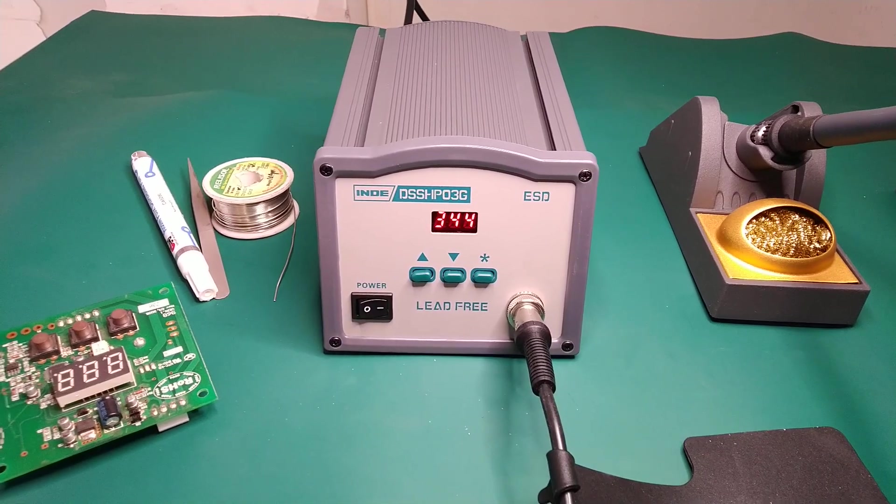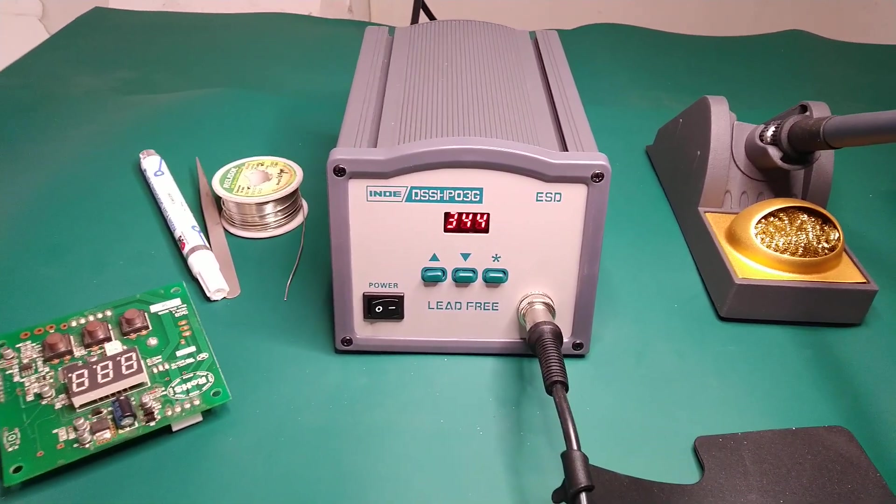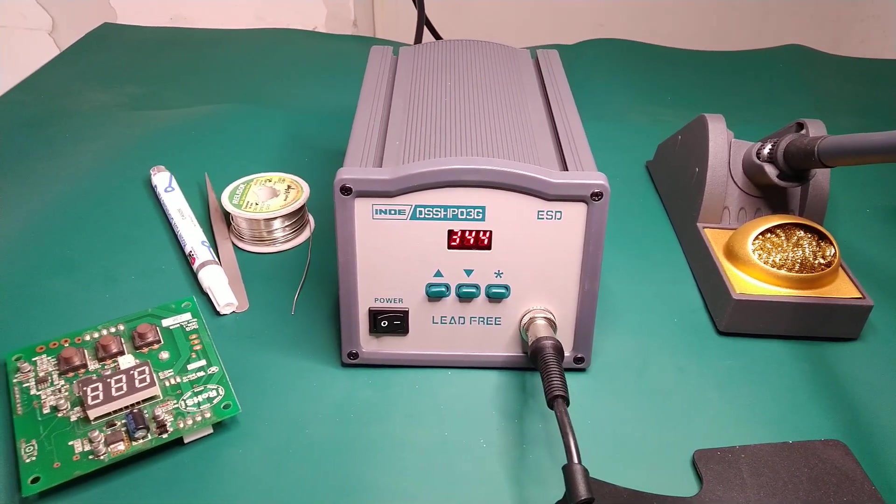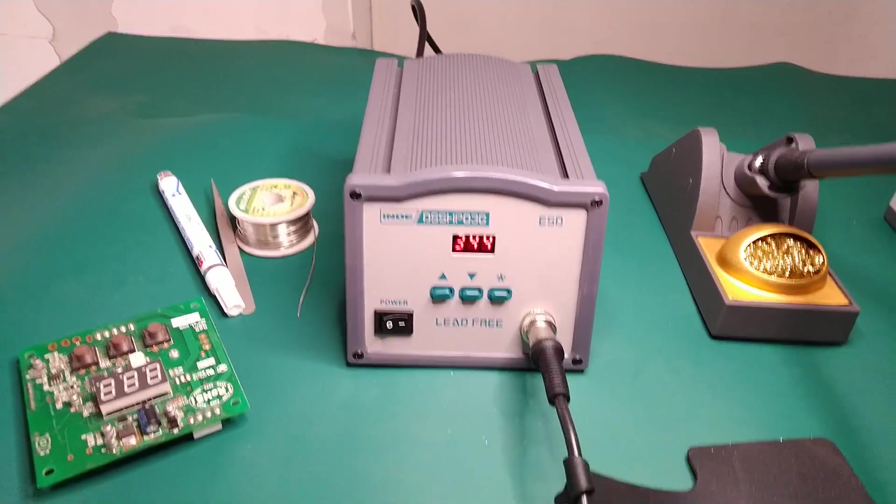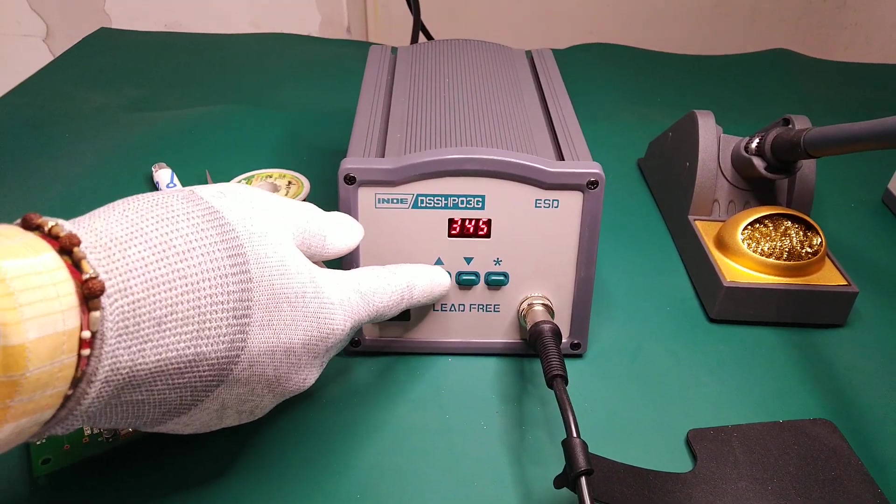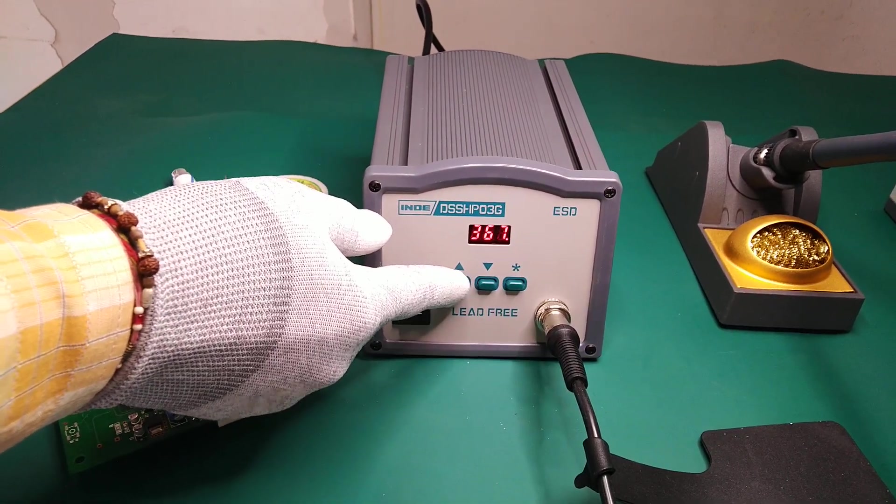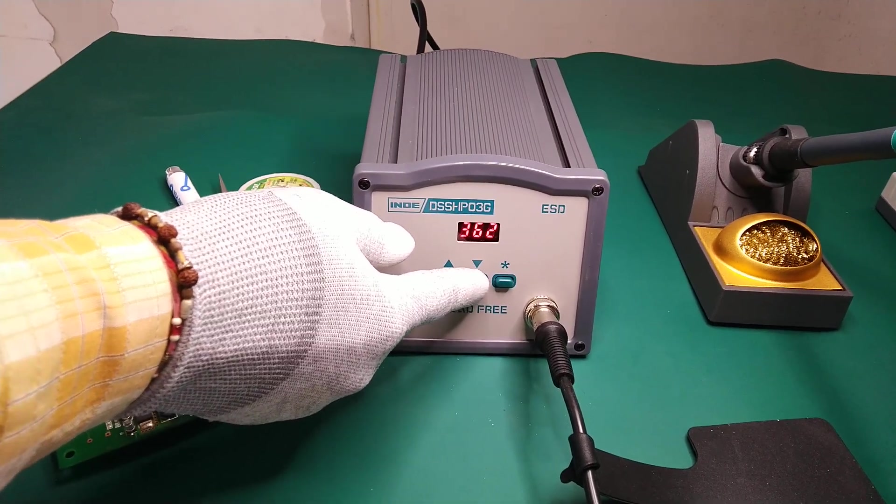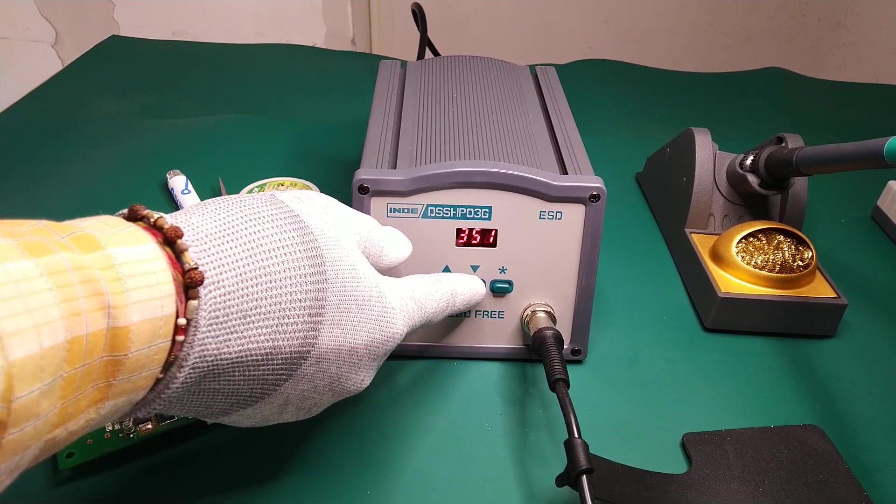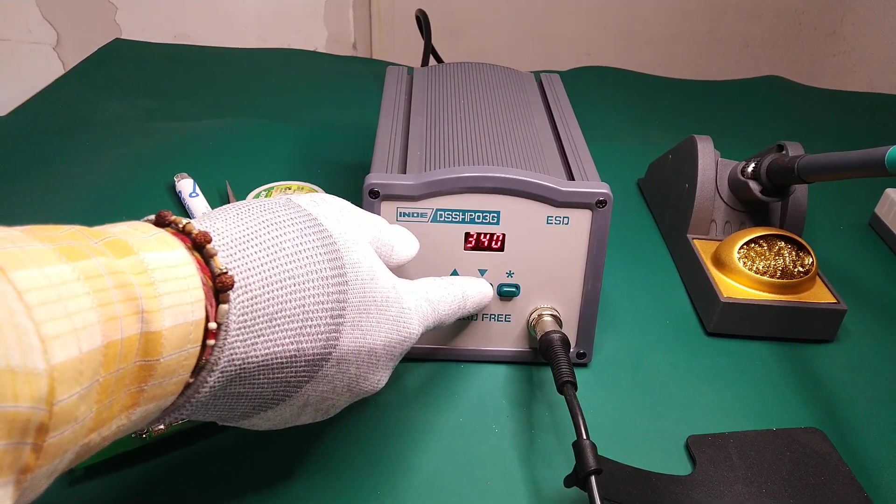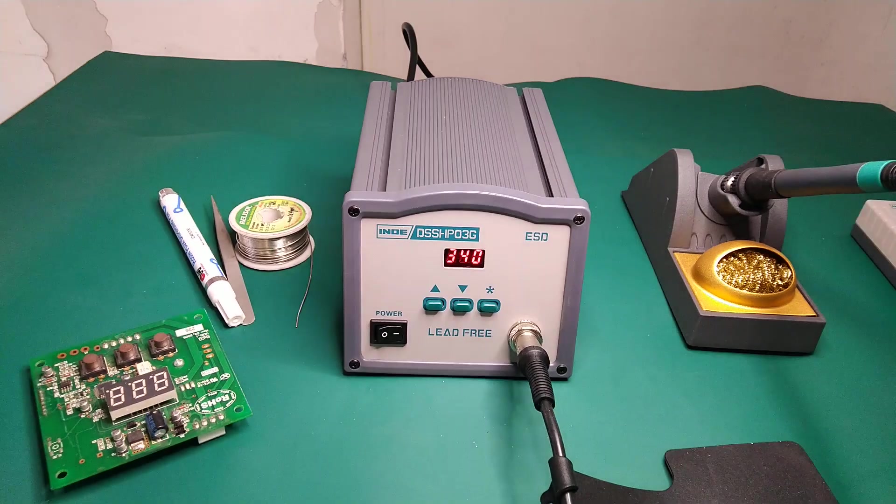Okay, now this station has reached the set temperature. We will show you how to increase or decrease the temperature using the push buttons provided on the front panel. By pushing these up and down buttons, you can increase or decrease the temperature to achieve the desired level.